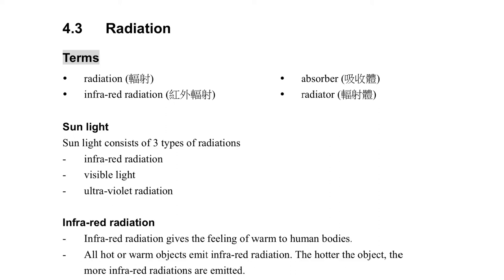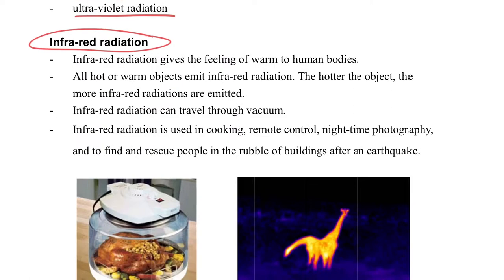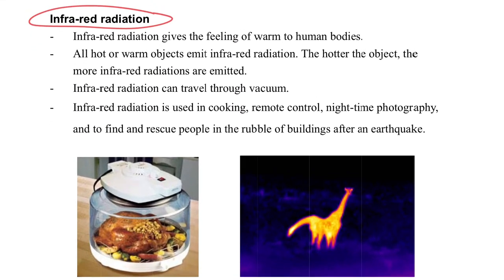Radiation. What is radiation? When we consider sunlight, actually it consists of three types of radiation: infrared radiation, visible light, and ultraviolet light.